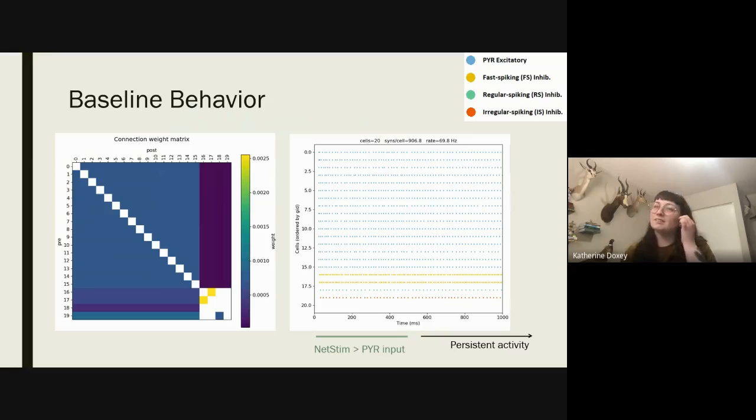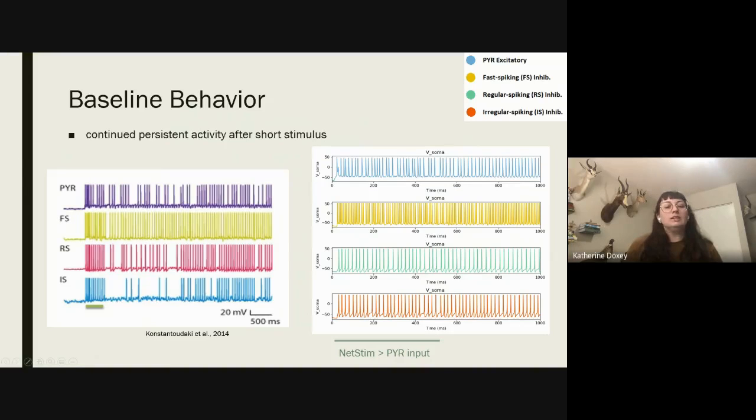Okay. So yeah, once we got the parameters tuned a bit more and the cells had been validated, so we started to compare the baseline behavior of the model to what was in the paper. And before that, I do want to give an overall idea and view of what's going on with the persistent activity. And so on the right is a raster plot. And this shows all of the 20 different cells. And as you can see, like with the irregularity, the regular spiking, irregular spiking are kind of synchronized when they really shouldn't be.